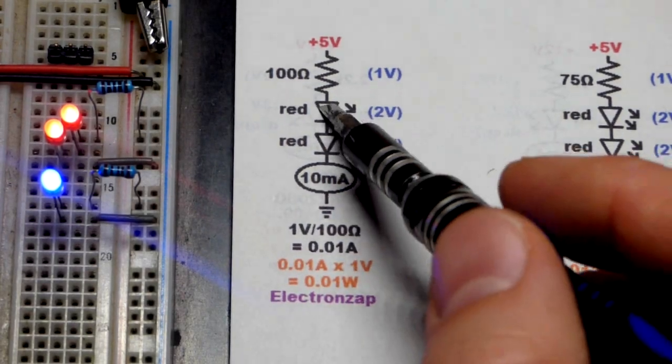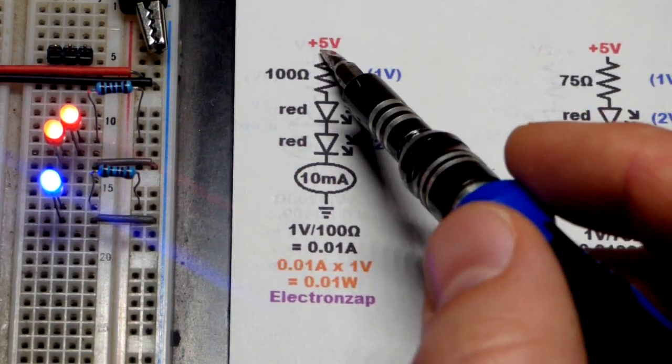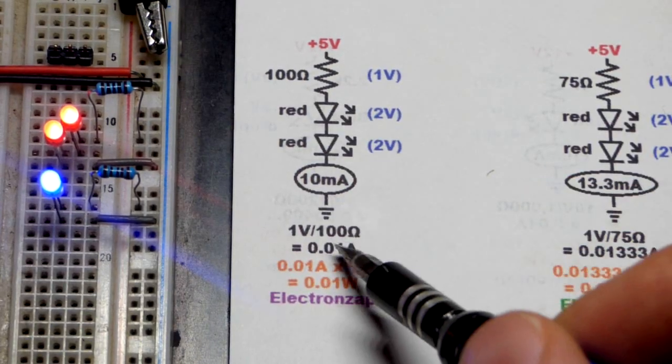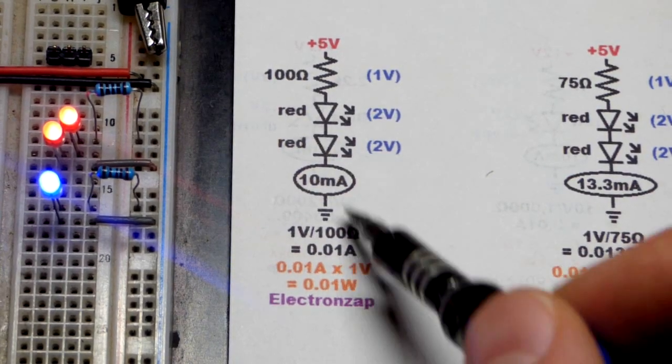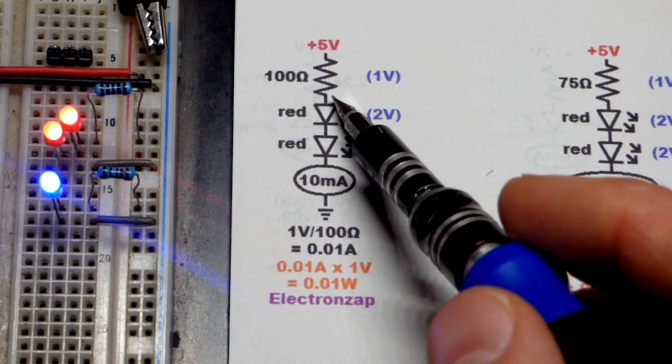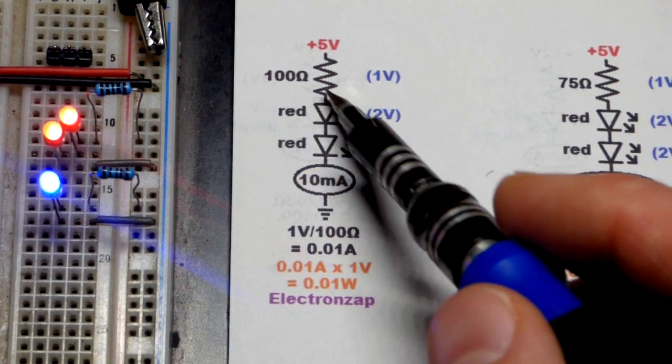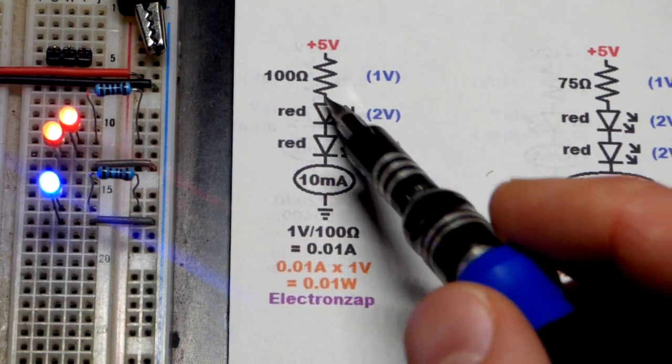So now we're going to look at lighting two series red LEDs with 5 volts. There's a couple reasons you may want to do this: you may want twice the light for a given amount of current, or maybe you just want to waste less power. Again, twice the light and less resistance heat, which is just waste heat.